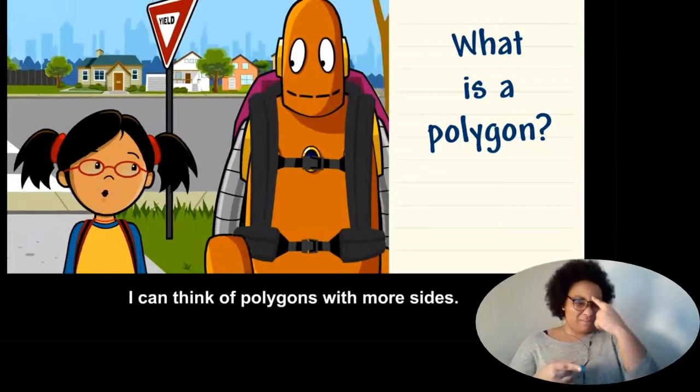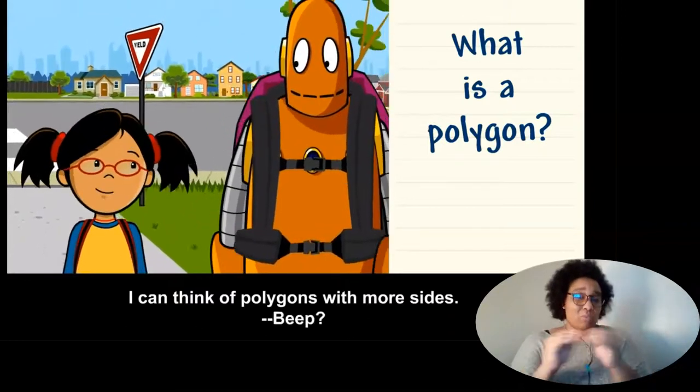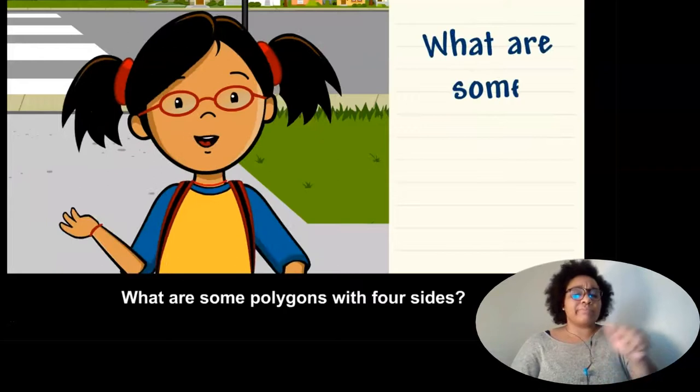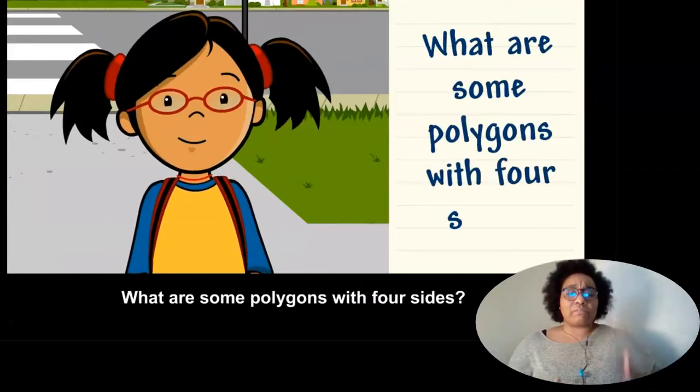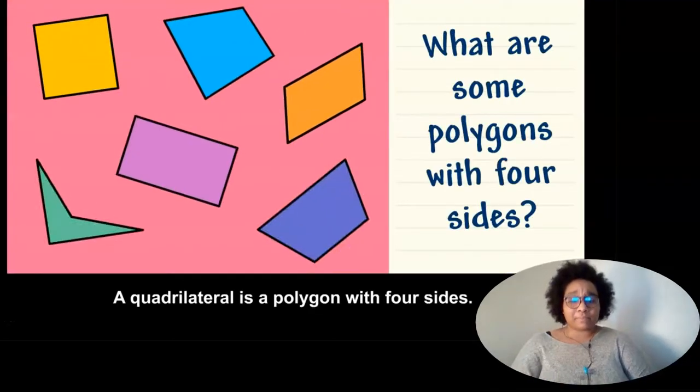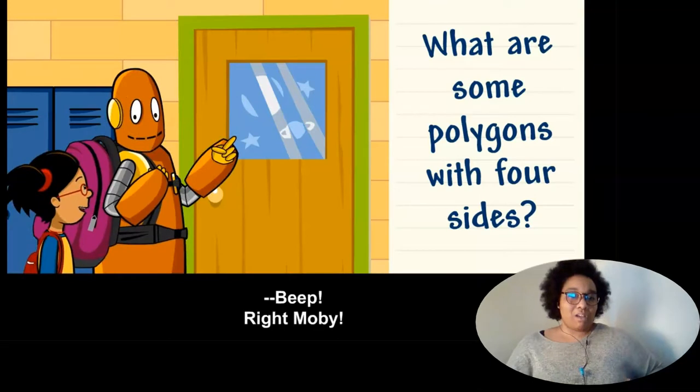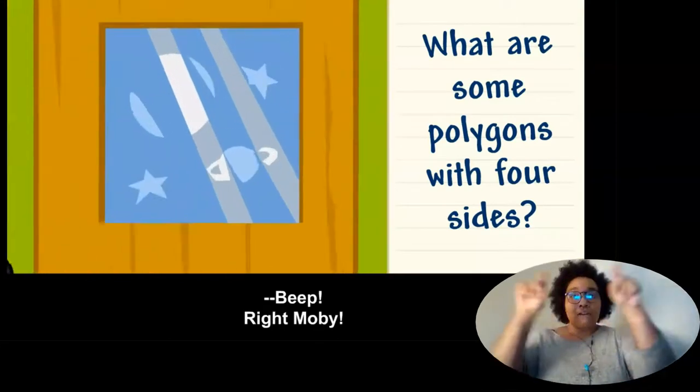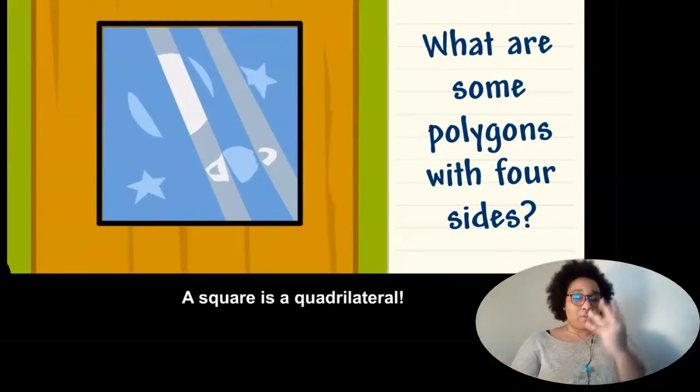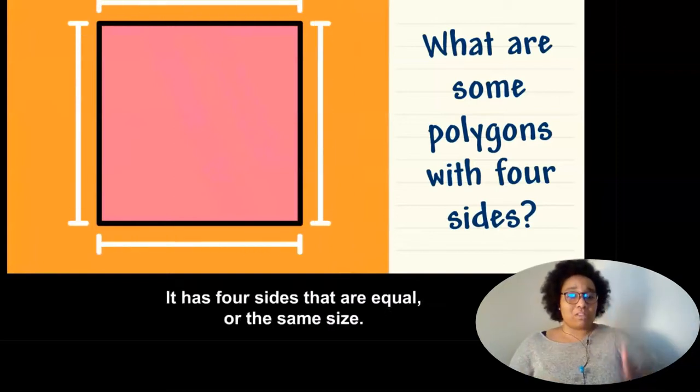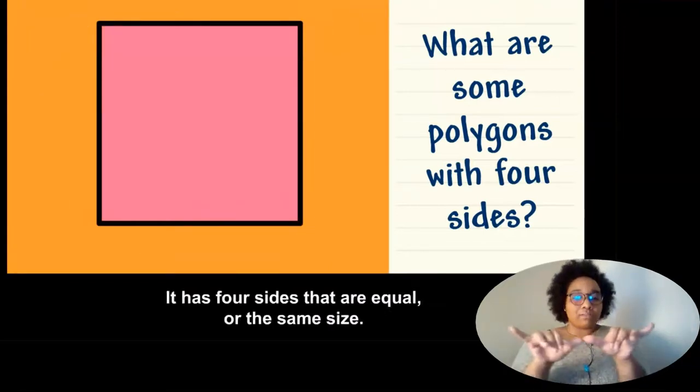I can think of polygons with more sides. What are some polygons with four sides? A quadrilateral is a polygon with four sides, right Moby? A square is a quadrilateral. It has four sides that are equal or the same size. A square has four vertices.